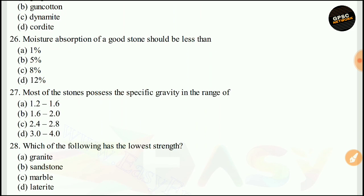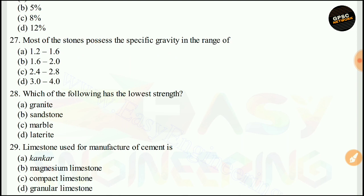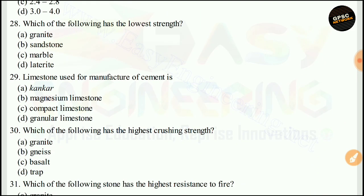Moisture absorption of good stone should be less than 5%. The right answer is B. Most stones possess a specific gravity in the range of 2.4 to 2.8. The right answer is C. Which of the following has the lowest strength? The right answer is D — laterite.